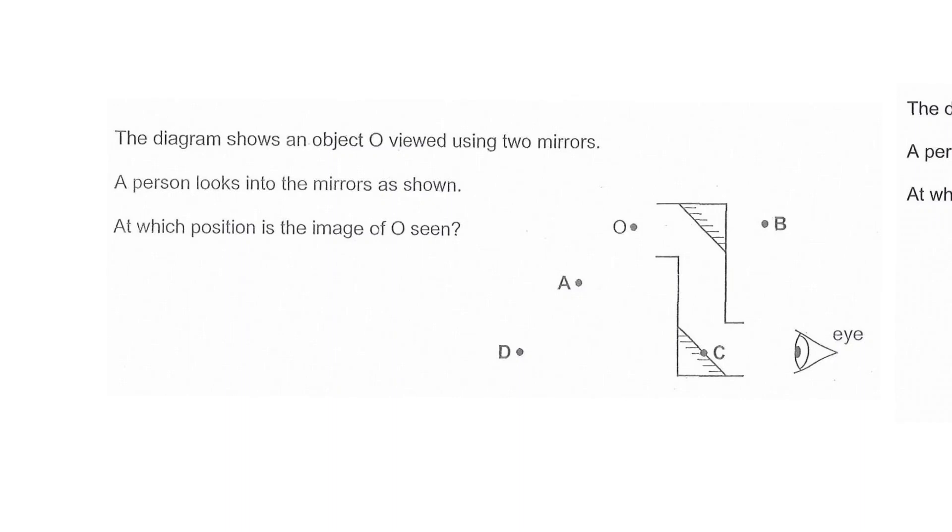In this video we're going to go through questions that are related to two mirrors. In this case it's a periscope, and you are given the object that's over here, O. If you look through the periscope, you know that the light will actually behave this way: hit the mirror, it will come to here, and then it will go into your eye.